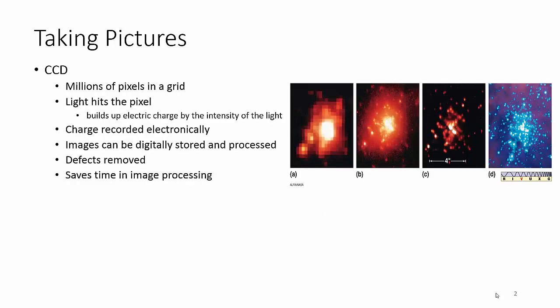All right, so how do the CCD things work? I'm a little bit confused, but basically you've got millions of pixels on a grid. Light hits the pixel, it builds up an electric charge. We've talked about the EM field and how that works. And so this charge can be recorded electronically. Now, once you have the picture recorded, of course, it's the computer age, right? So we can store it, we can process it, we can use software to remove all the defects, and you end up getting what used to be picture A,